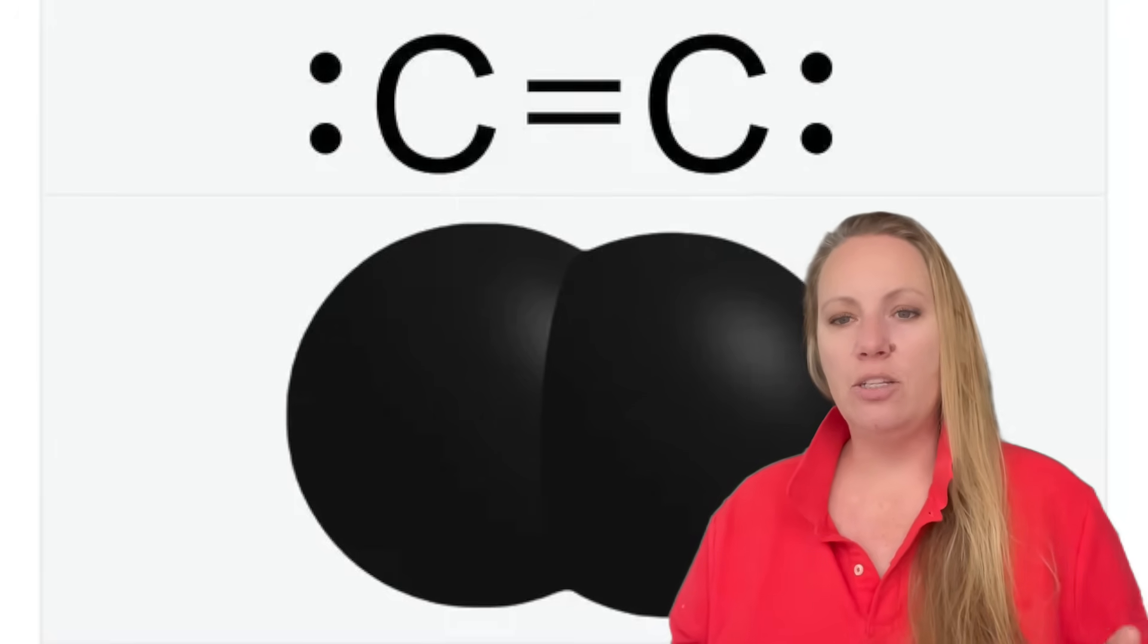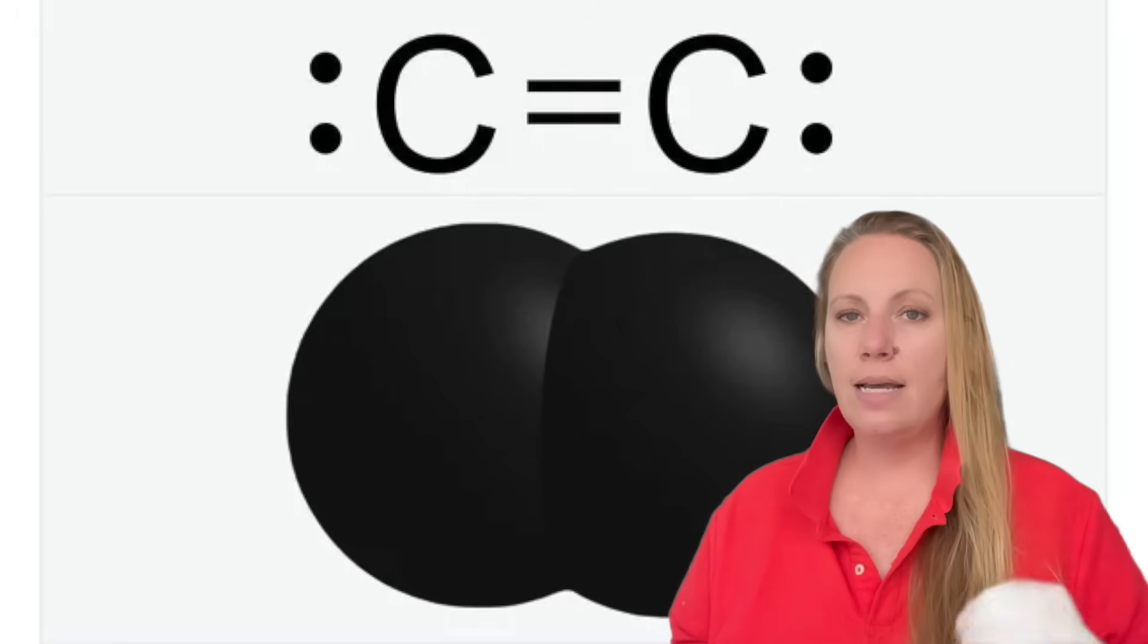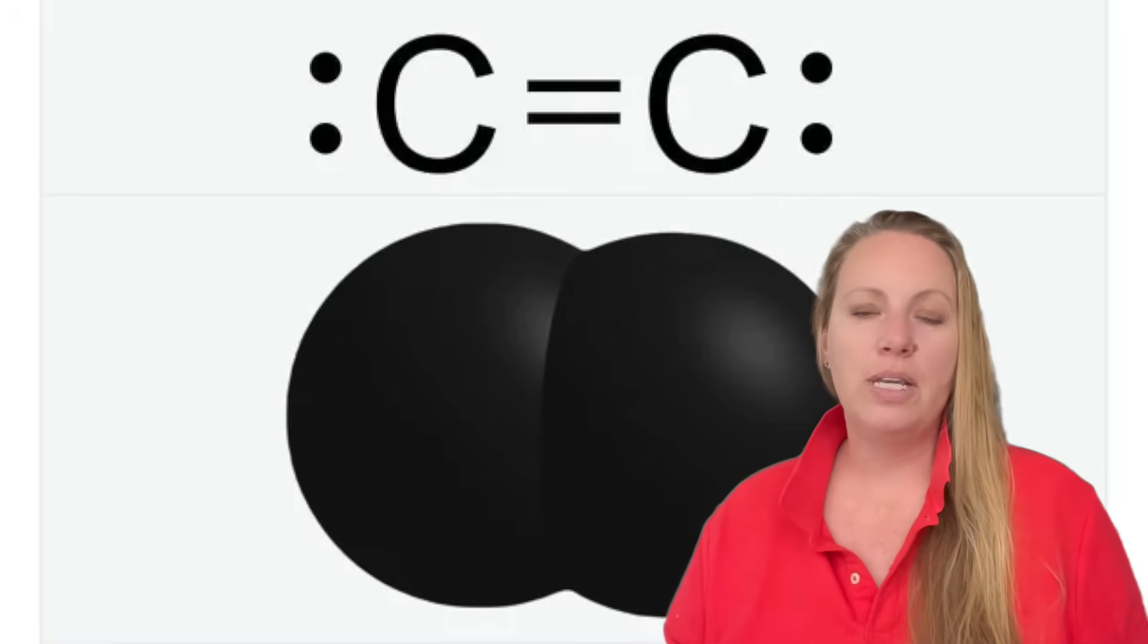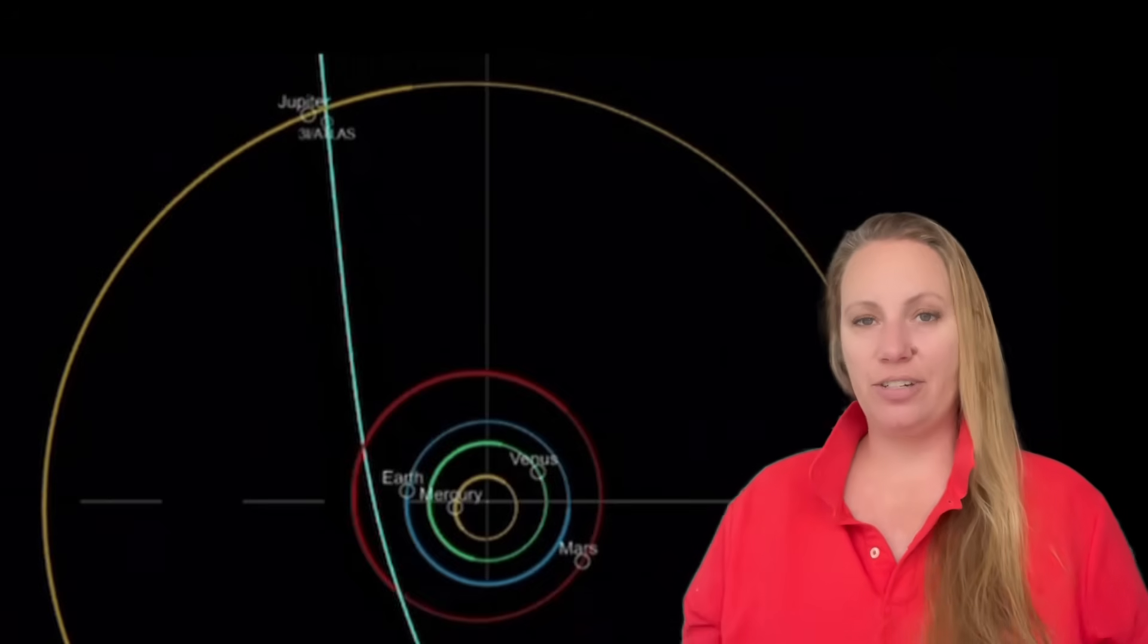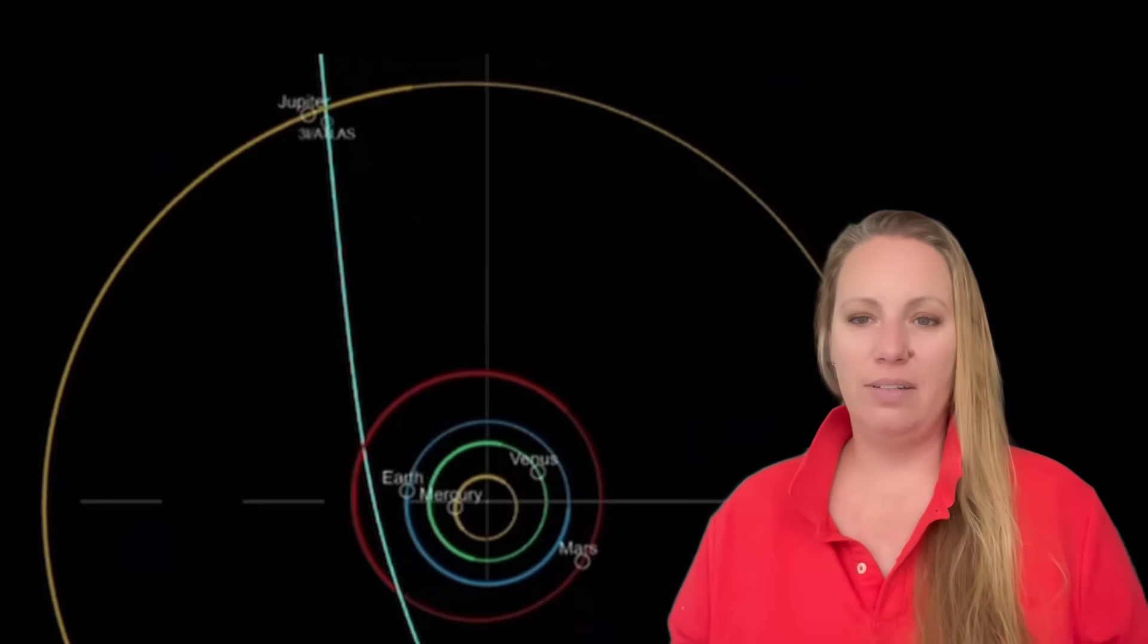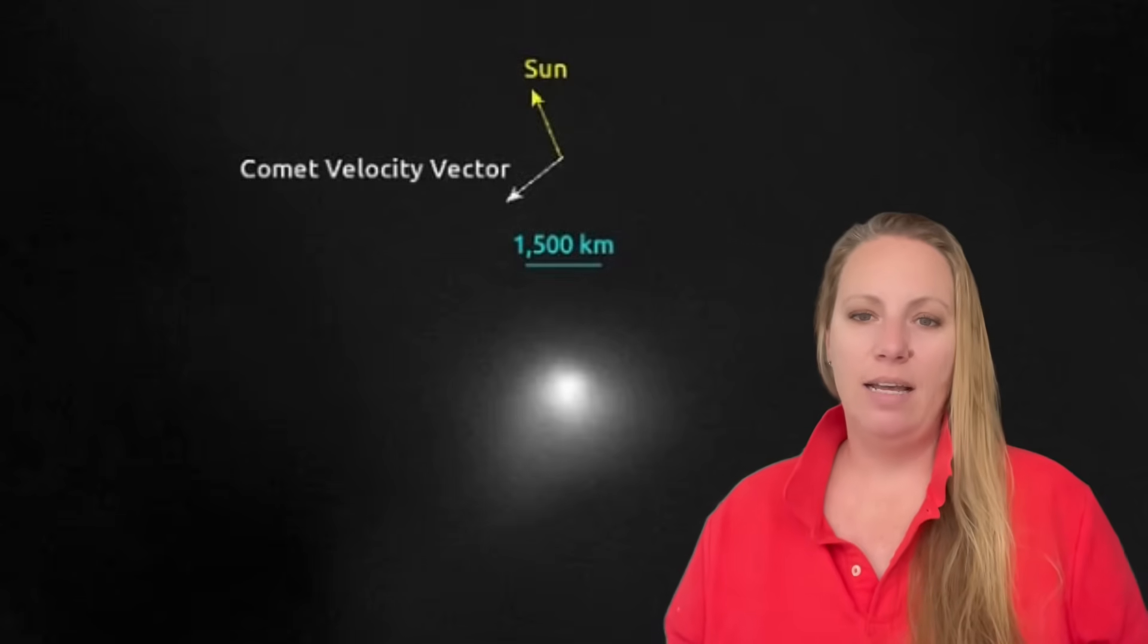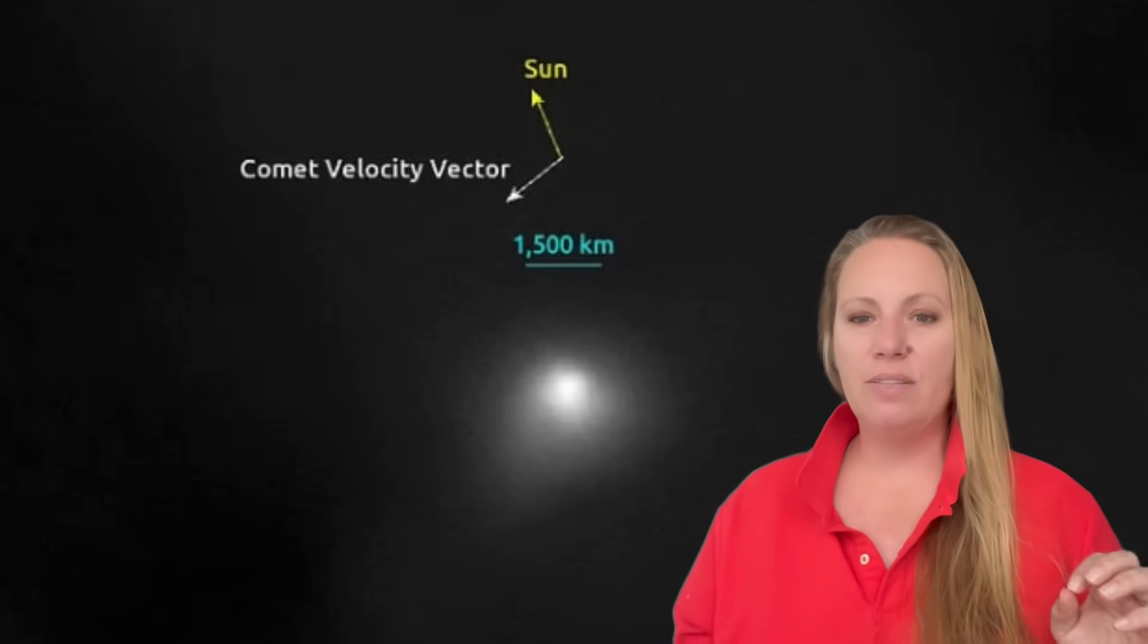Diatomic carbon is two carbon atoms stuck together. When sunlight hits these molecules, they emit green light. This means the gas composition around 3i Atlas has changed - that's the key point.